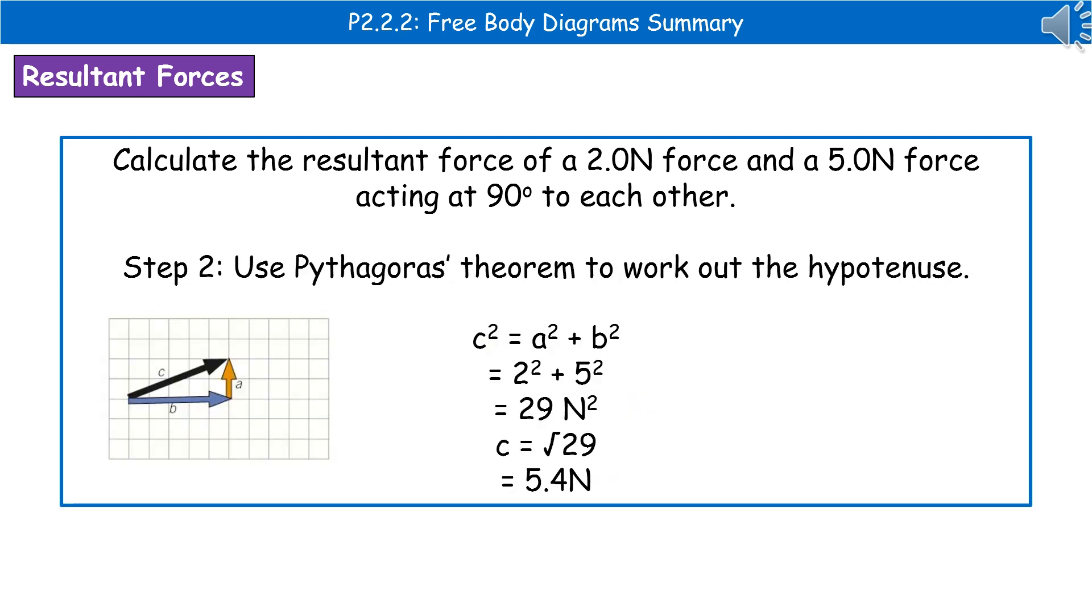The next thing we need to do is bring in Pythagoras' theorem to work out the hypotenuse. Hopefully we remember that c² = a² + b². Substitute in our values. So we've got 2² + 5². And then work it out. Gives us 29 N² for our C.